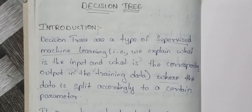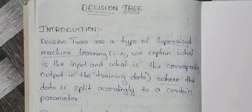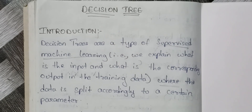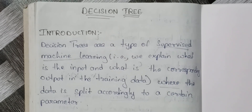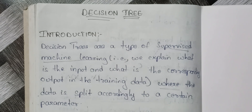Hello everyone! In the previous video, there are three parts of Unit 1. One is the introduction, concept learning, and general specific ordering, and then decision tree learning.